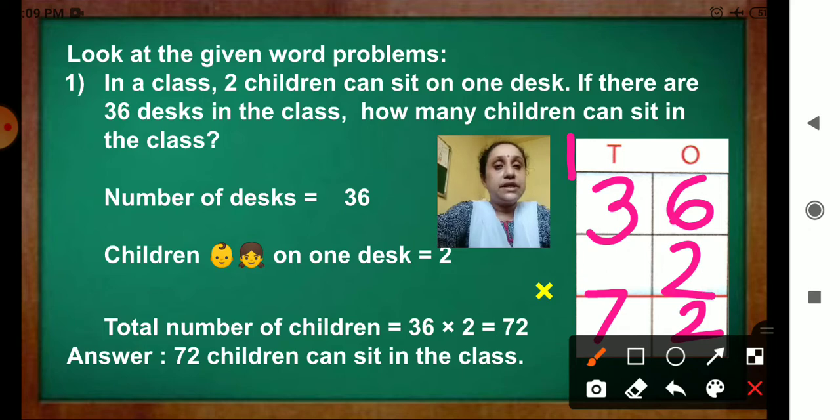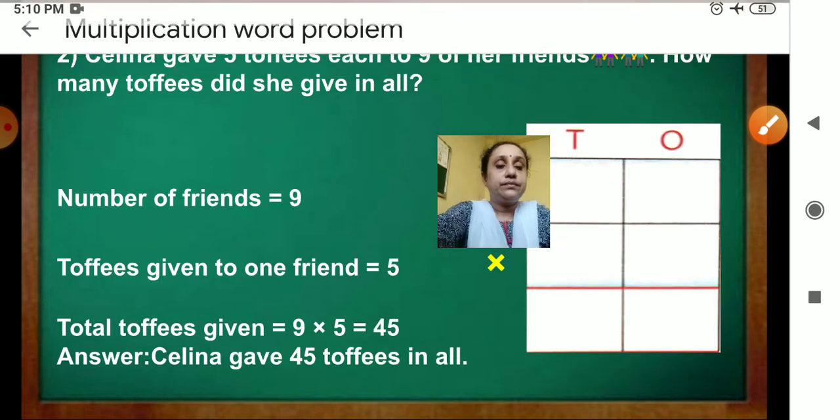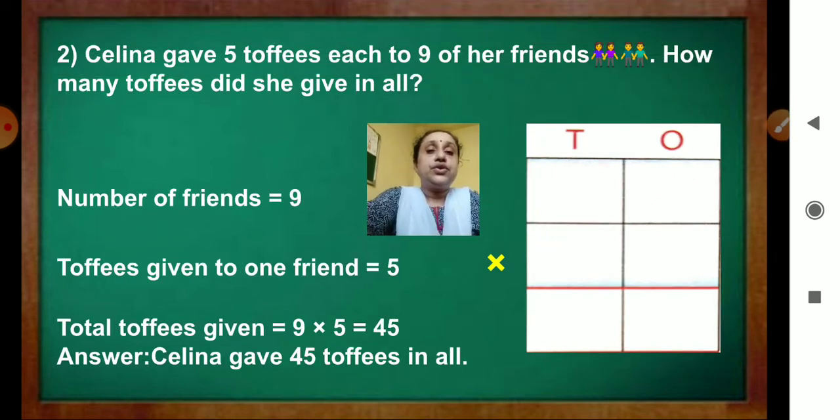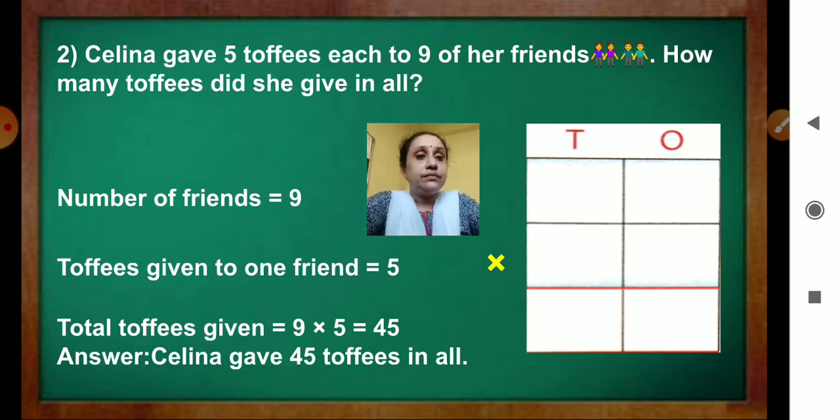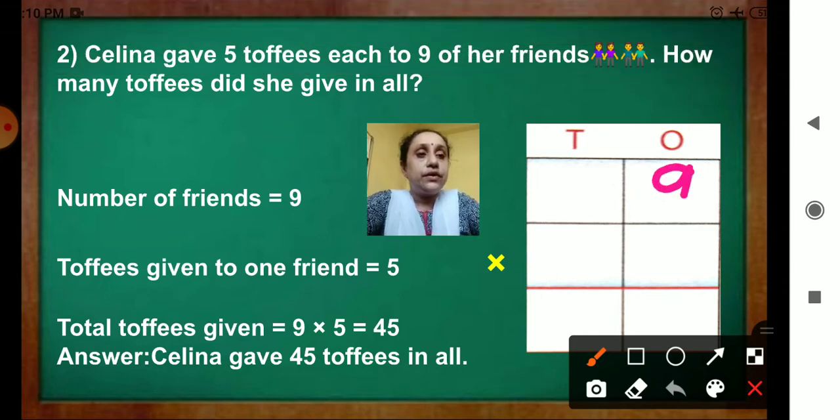Now, we will see the next example. Question 2, Selena gave 5 toffees each to 9 of her friends. How many toffees did she give in all? Now number of friends, 9. So we will write 9 in the ones place.